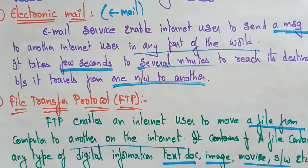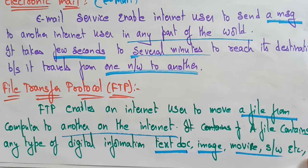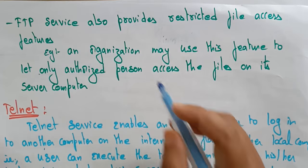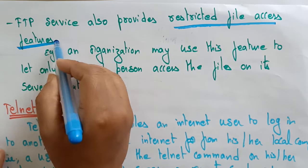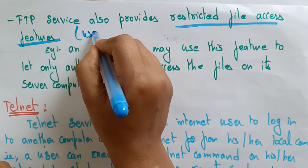Nowadays if you want to email a file, you use file transfer protocols. For example, with Google Drive you upload text documents, images, software — and if the size is large, we use this type of file transfer protocol to send from one computer to another. The FTP service also provides restricted file access, allowing you to send audio, video, movie files, and software files.